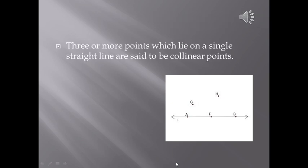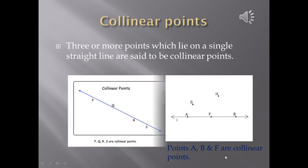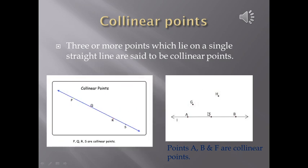Observe the figure that you have drawn just now. In this figure you can find points A, B and F are in a straight line. Three or more points which lie on a single straight line are said to be collinear points. So in this figure points A, B and F are collinear points.